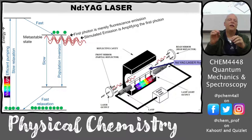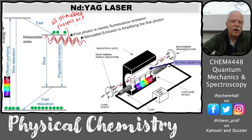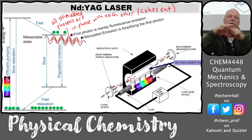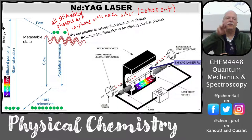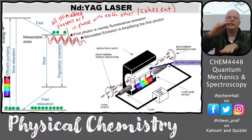Whenever you have stimulated emission, you get a second photon in phase with the first. All stimulated photons are in phase with each other. Another word for that is coherent — lasers emit coherent light. In a wave model, it's a single wave with an enormous amplitude. In a particle model, lots of photons all have the same wave properties in phase with each other. If they're in phase, it's just a cosine with an enormous amplitude.